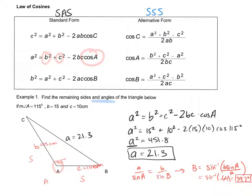We're going to use the exact same setup for C — except now we're going to plug in c — and so angle C is going to be 25.3 degrees.